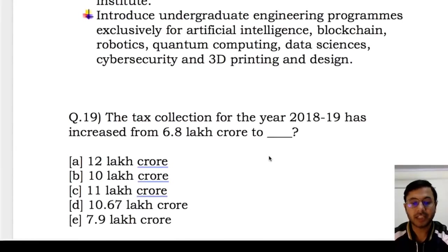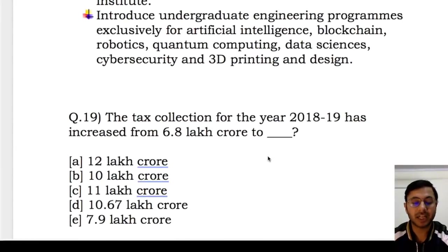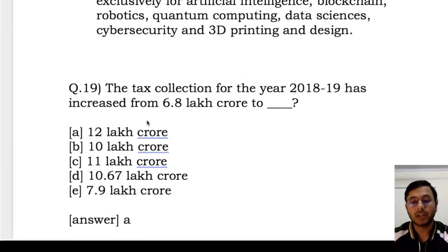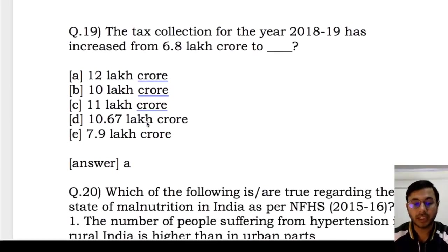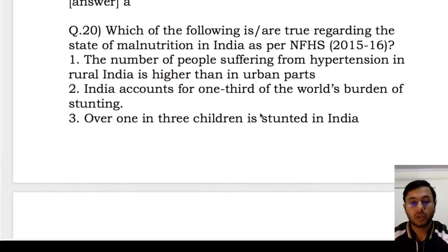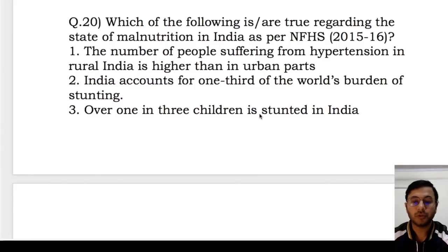Next question: tax collection for the year 2018-19 has increased from 6.8 lakh crore to how much? It is a factual question. The answer is 12 lakh crore — that is the total tax collection for 2018-19.